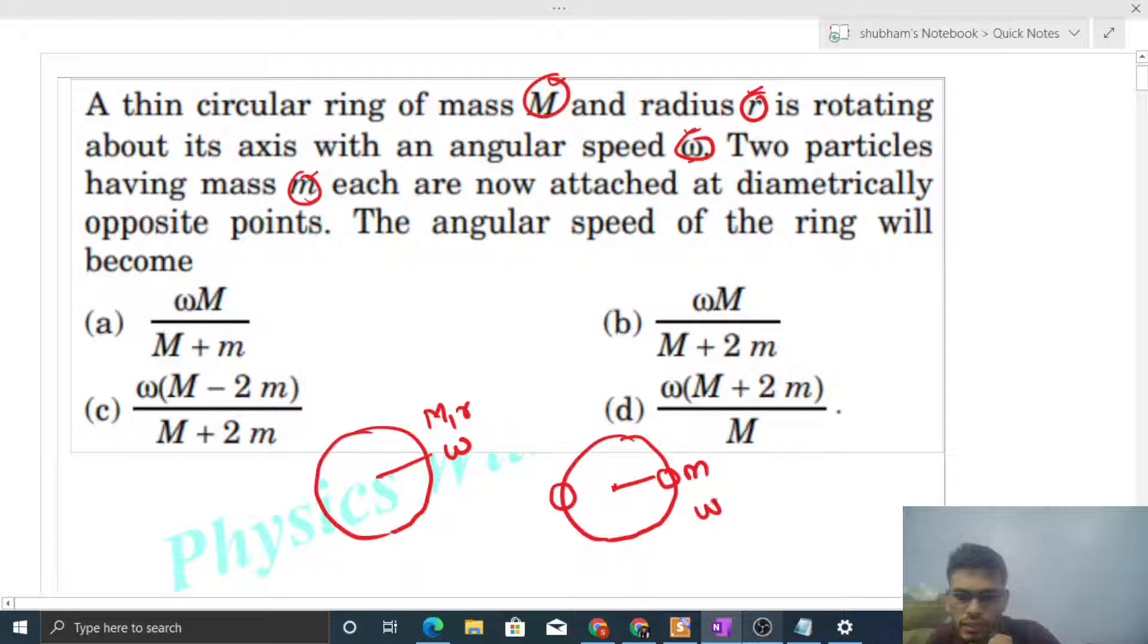We can conserve the angular momentum, right? Because when you place these two particles at diametrically opposite ends, no external torque will act. If no external torque is acting on the system, then angular momentum of the system will not change.